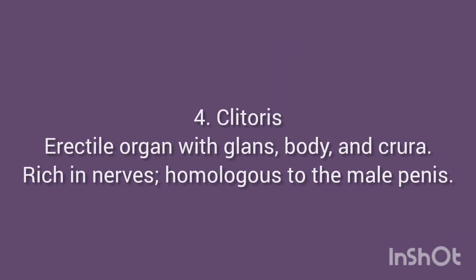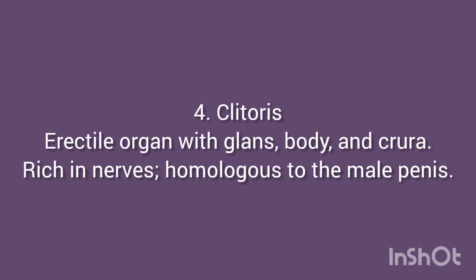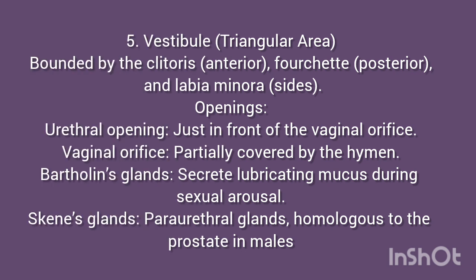4. Clitoris: An erectile organ with glans, body, and crura. Rich in nerves and homologous to the male penis. 5. Vestibule: A triangular area bounded by the clitoris anteriorly, the fourchette posteriorly, and the labia minora on the sides. Openings include the urethral opening just in front of the vaginal orifice, and the vaginal orifice partially covered by the hymen.